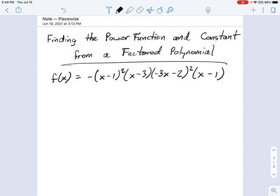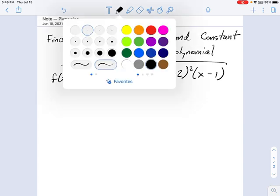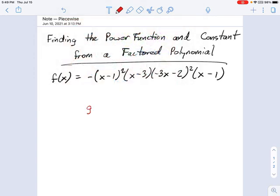When you have a standard form polynomial, it's actually very easy to find those two things. For example, if you had some polynomial g(x) = -5x³ + x - 7, there's the constant and there's the power function, right? They're just looking right at you. So that's very easy.